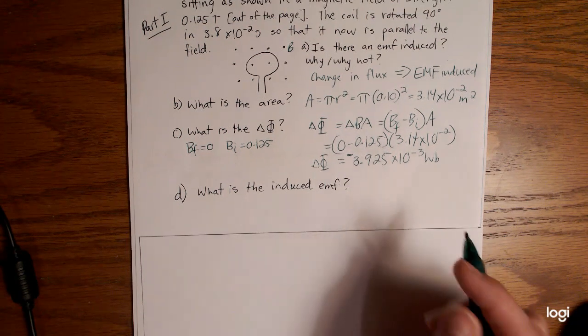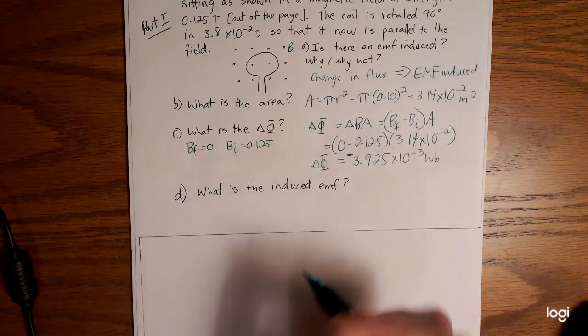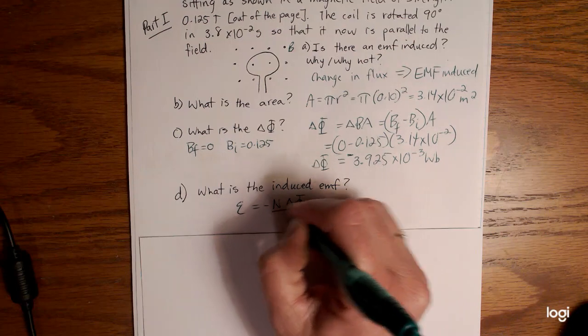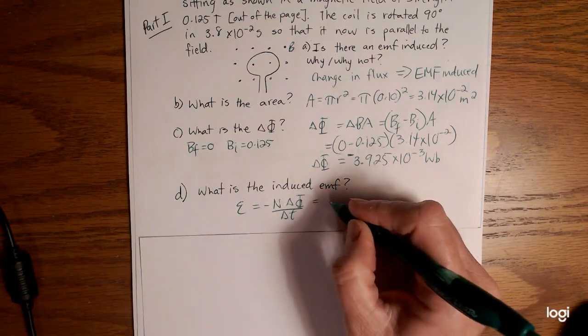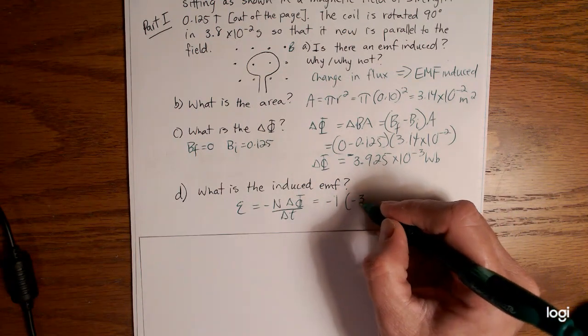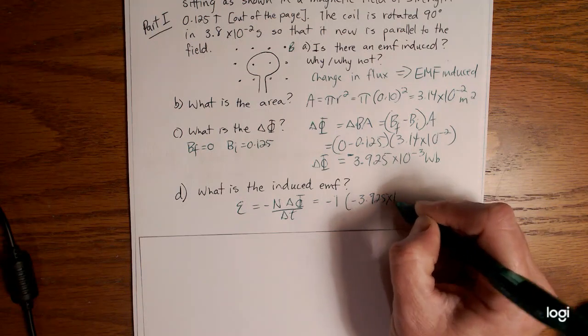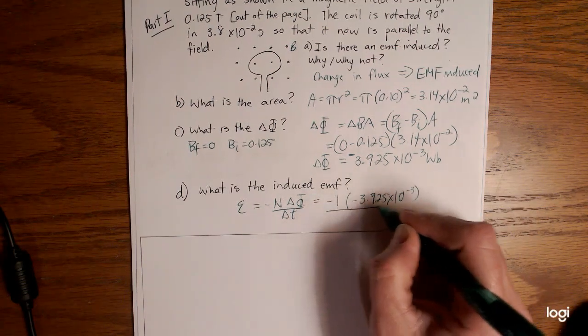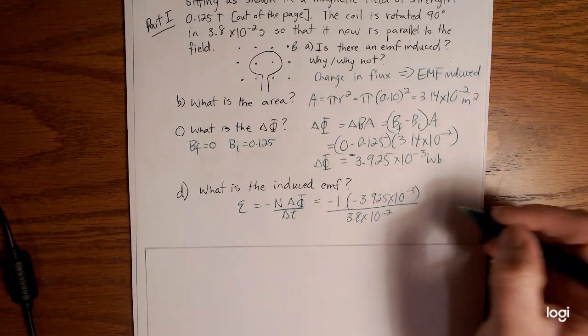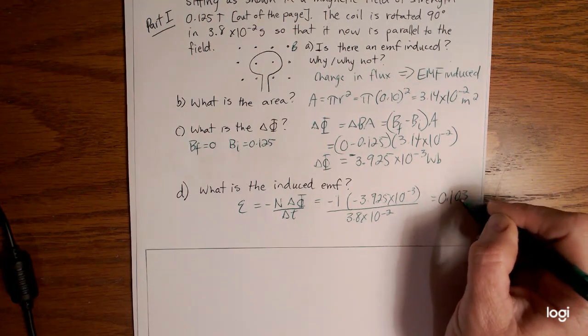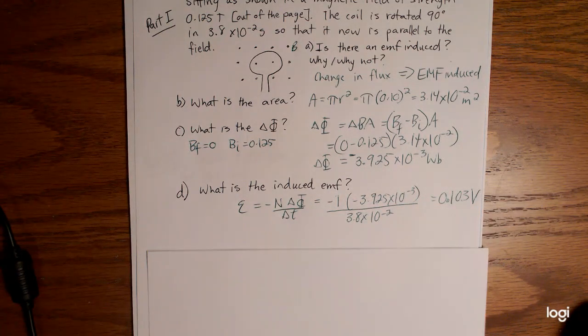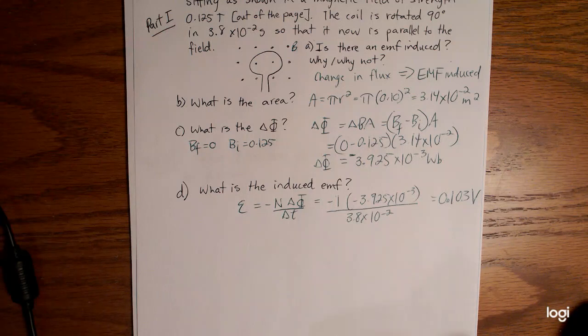So what is the induced EMF if this is our change in flux? E is equal to negative n delta phi over delta t. We have only one loop so n is equal to 1. Our delta phi is 3.925 times 10 to the negative 3, and yes I included the negative, all over 3.8 times 10 to the negative 2. That gives us a value of 0.103 volts.